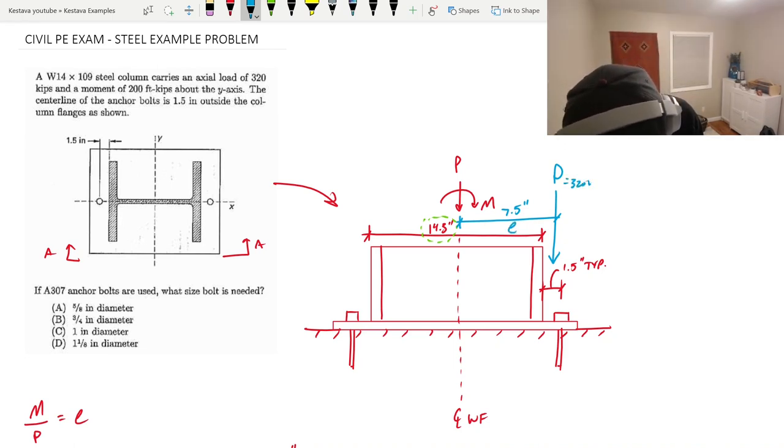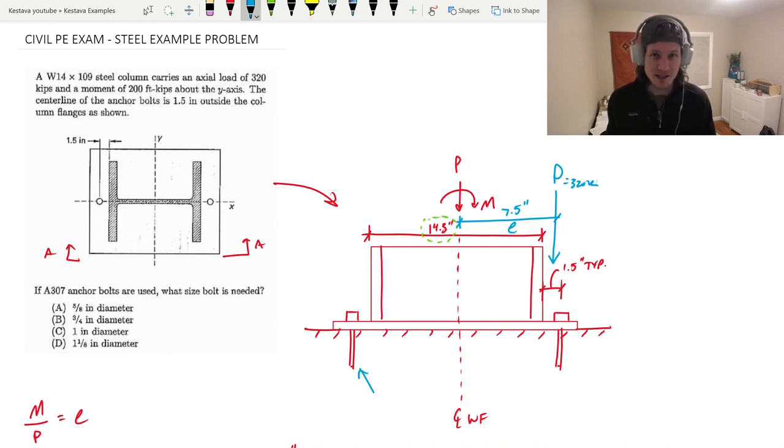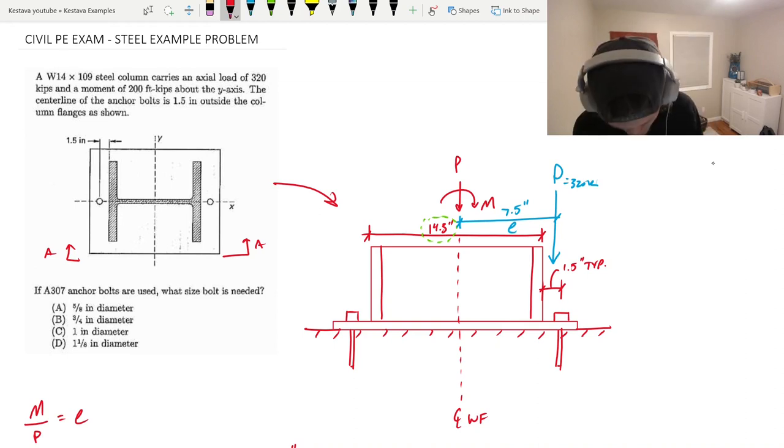That has an eccentricity of 7.5 inches. P is still 320 kips. Since our resultant is outside of the column flange, it means we are introducing an eccentricity large enough that one of the anchor bolts, the opposite anchor bolt, will be experiencing uplift and tensile stresses in the bolt. Lo and behold, we need to solve for that number, that tensile force acting on that anchor, in order to size our anchor bolt. And that is our underlying problem.